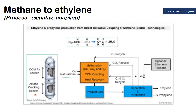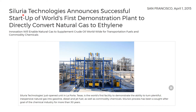This is an overview of the entire OCM process. In the reactor there are two sections: the OCM reaction section and the alkane cracking section. Oxygen and natural gas are fed to this reactor, and then the product gas is further moved to the separation and purification unit to produce the end products, namely ethylene and ethane. Silureo Technologies is the first company in the world to start up the first commercial plant to directly convert natural gas to ethylene, which was done in 2015. The plant is located in San Francisco, USA.